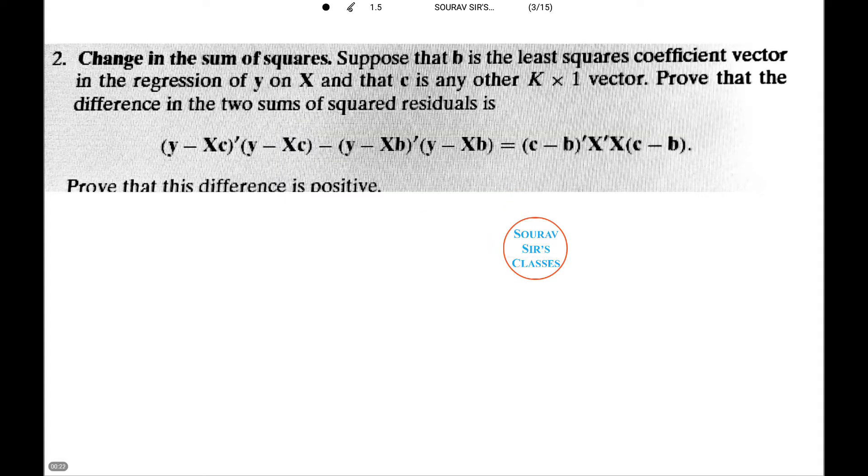Now in this question, change in the sum of squares, suppose that b is the least squares coefficient vector in the regression of y on X and that c is any other k into one vector. We have to prove the difference in the two sum of squared residuals as given in the question that you can see, and we need to prove that this difference is positive. Let us operate on this equation.